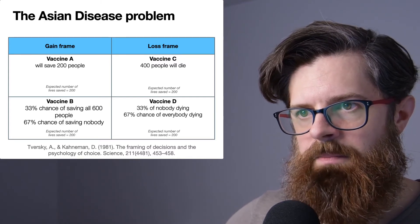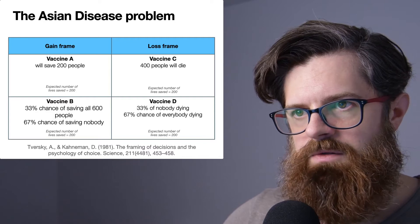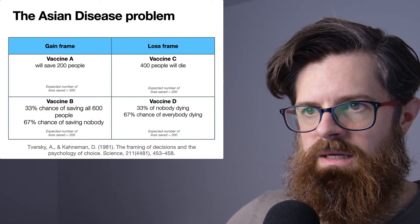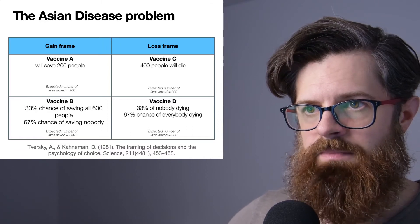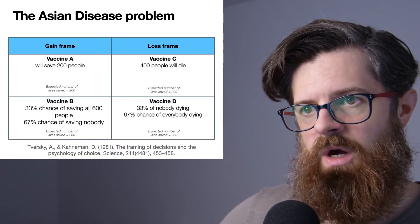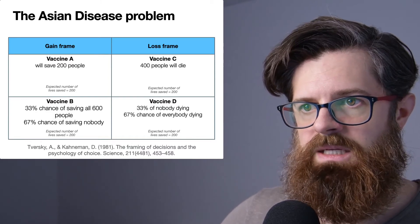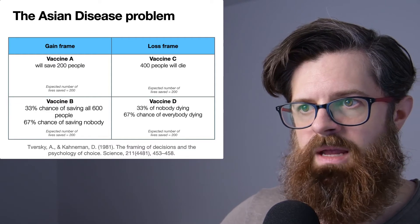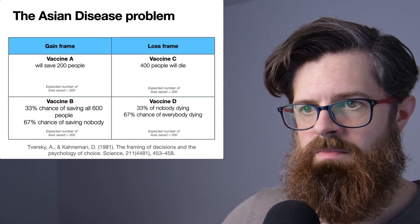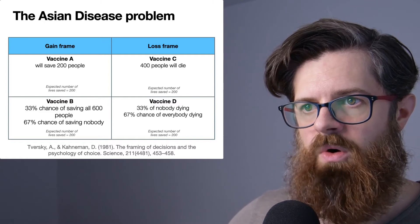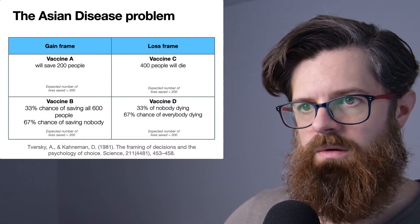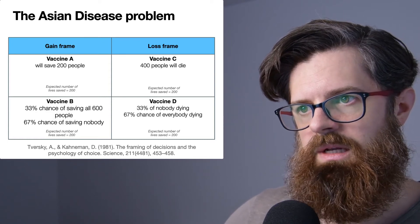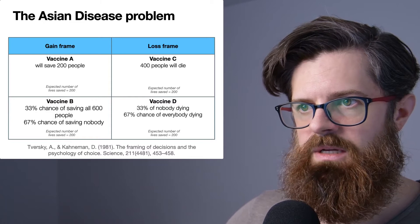We're going to look at the results in a moment. Let's just finish our thinking in terms of our predictions. Vaccine C again has the same expected number of lives saved of 200, and so does Vaccine D. This is quite a clever design here—all of these vaccines would save the same number of people on average.